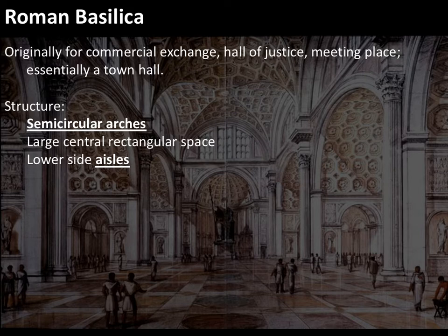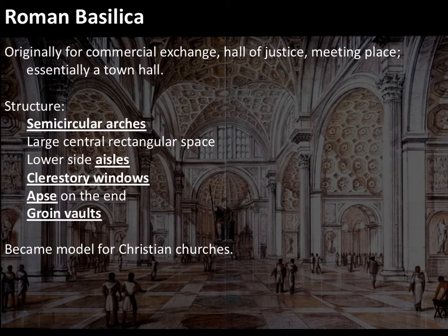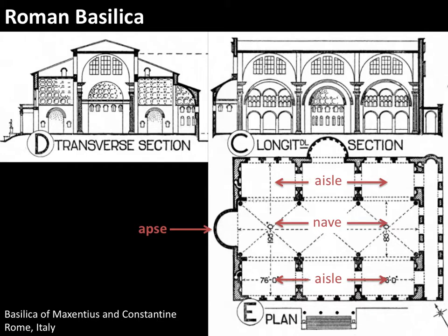It's the architecture that carries through into Romanesque times. Looking at the structure, you see those Roman semicircular arches forming a large central rectangular space with lower side aisles on either side, formed using smaller arches. Up above, there are windows called a clerestory to get light inside. You also have an apse on the end — that curved area — and where vaults intersect at 90-degree angles, you have the groin vault.